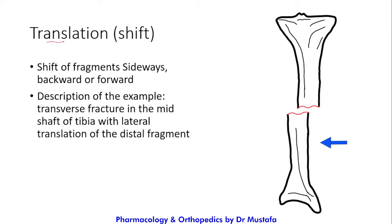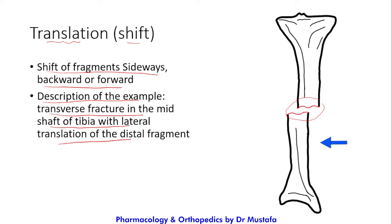The first displacement pattern is translation, also called shift — it is a shift of the fragments sideways, backward, or forward. For example, a transverse fracture in the mid shaft of the tibia would be described as: 'transverse fracture of the mid shaft of the tibia with lateral translation of the distal fragment.'